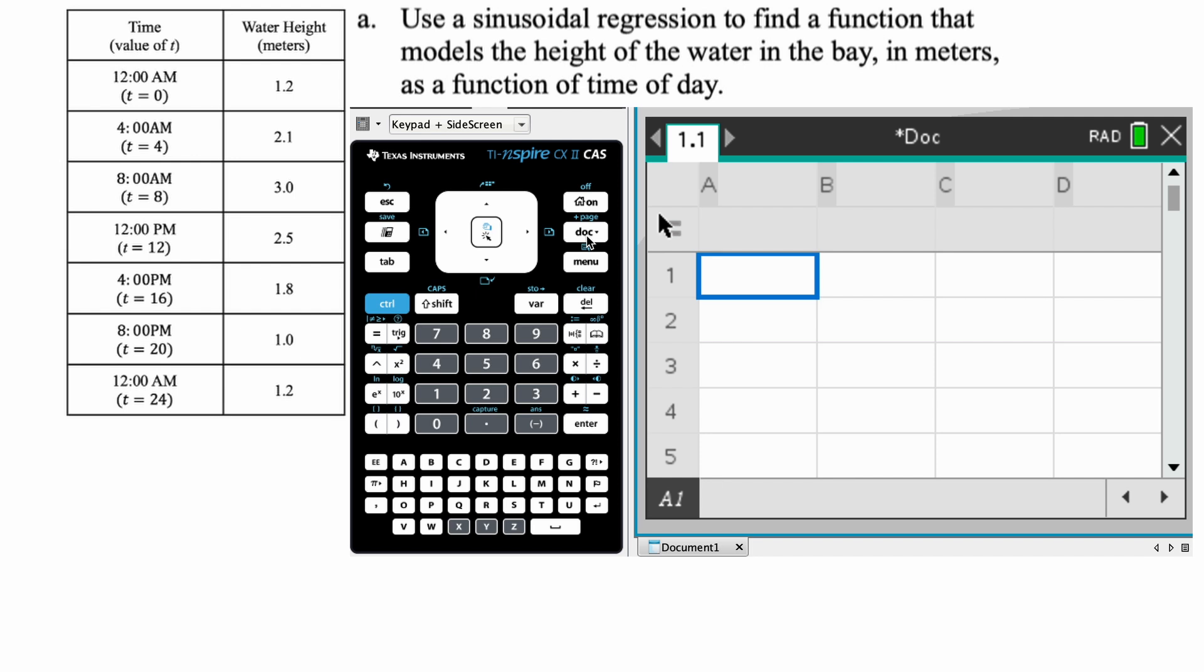All right, so in column A, I'm going to put in the t value. So I'm actually just going to type them. I mean, you can do this in a more clever way using like a sequence, but not really necessary. So we're typing them all in, and we got that. Okay, so 24, 20, 16, 12, 8, 4, 0. Okay, good.